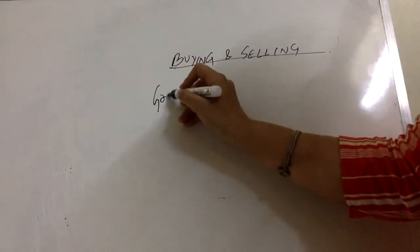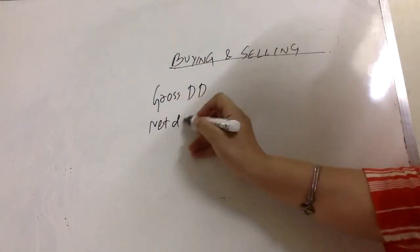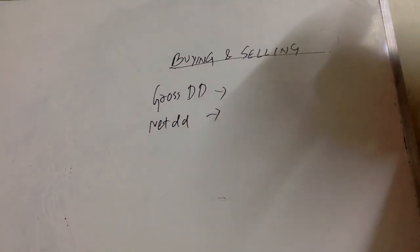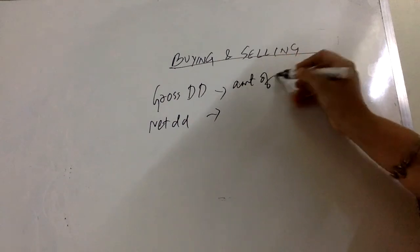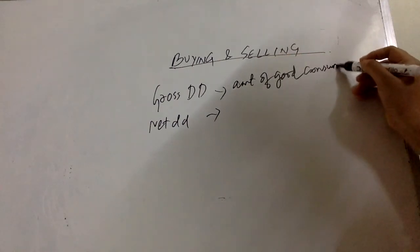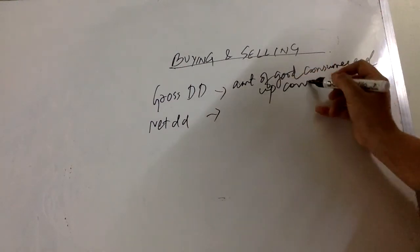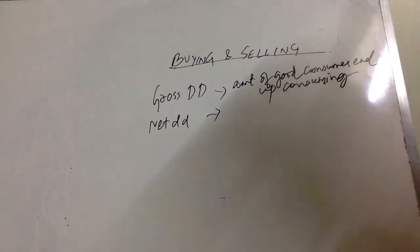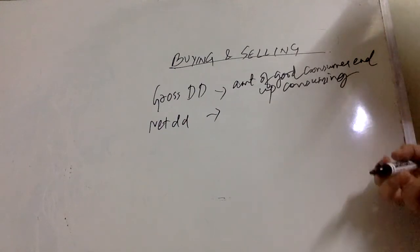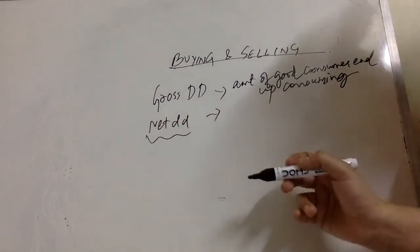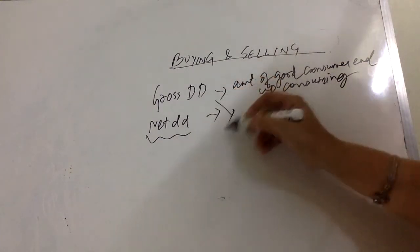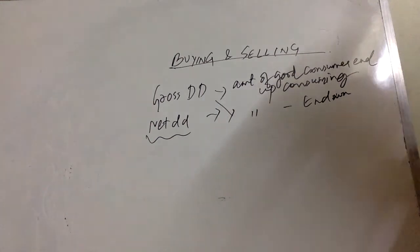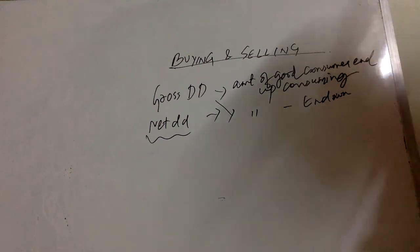We'll understand what gross demand is and what net demand is. Gross demand is simply the amount of a good that the consumer actually ends up consuming. Net demand is the difference between what the consumer consumes — that is, the gross demand — and the endowment. The endowment is something we assume each consumer has a certain amount of.